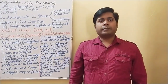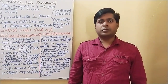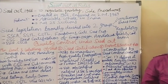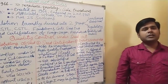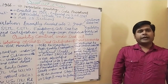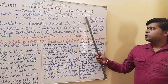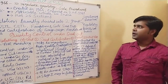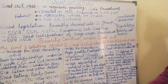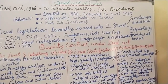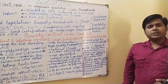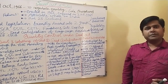Today I will teach you about Seed Act and Rules. Seed Act 1966 — the Indian Seed Act 1966 was enacted and enforced on 2nd October 1969. The main requirement to enact the Seed Act was to regulate the quality of seeds on the open market regarding genetic purity, physical purity, and germination standards, as well as vigor and viability.